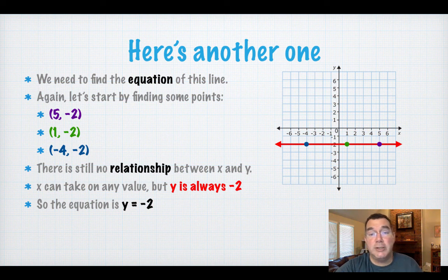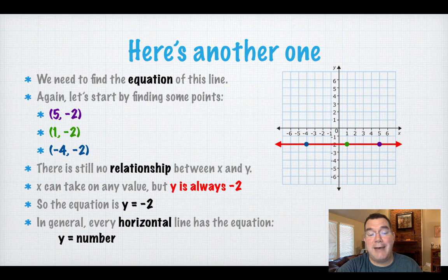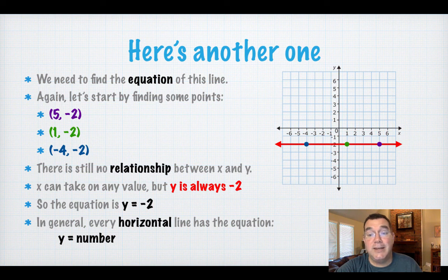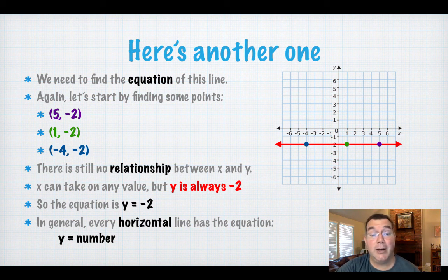So hopefully you can see a pattern here that any horizontal line is going to have the equation y equals whatever number is common to all of the y coordinates. And to make your life easier, you can just look at where that horizontal line crosses the y-axis and that will tell you right there what the equation is. Y equals that number.